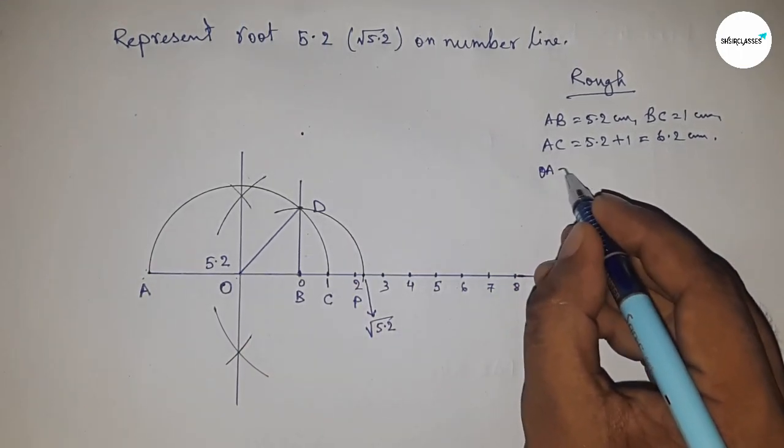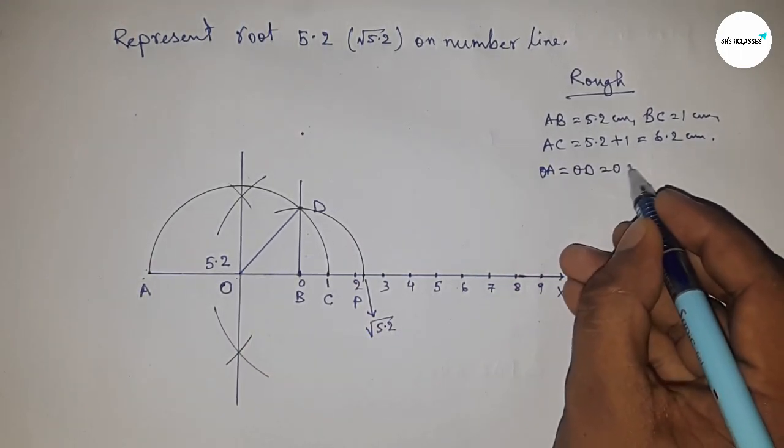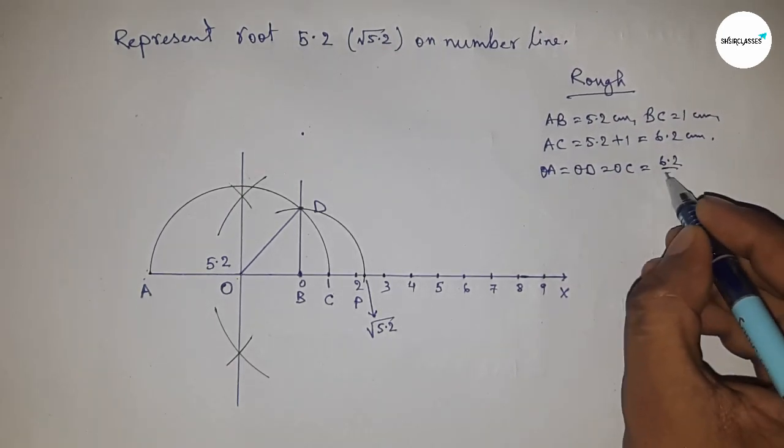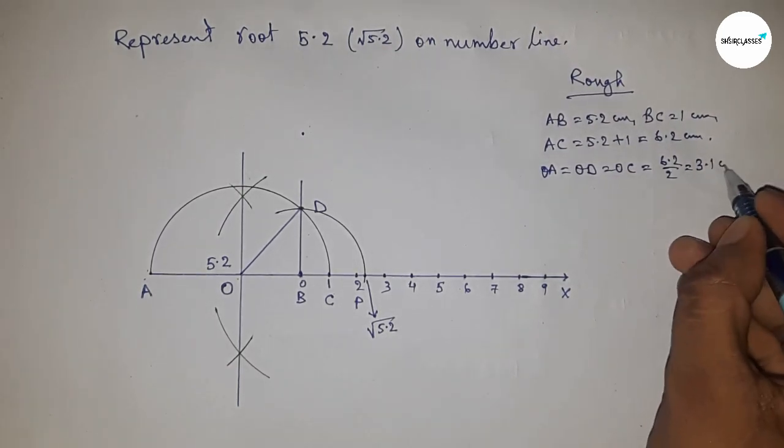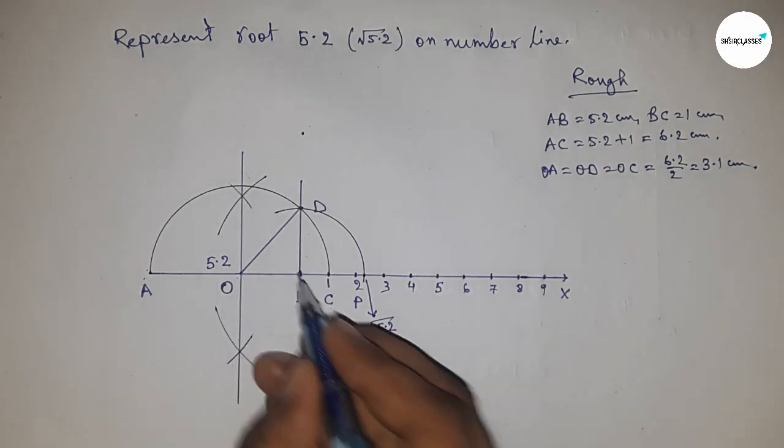The distance OB = OC - BC = 3.1 - 1 = 2.1 cm.